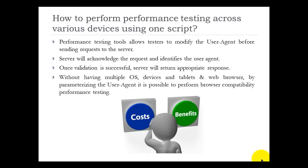Performance testing tools allow testers to modify user agent strings such as those recorded earlier. By parameterizing the particular user agent string, it is possible to perform browser compatibility performance testing. Once the user agent string is sent along with the request, the server will acknowledge that request, validate the user agent field, and once successful, the appropriate response will be sent back to the client.